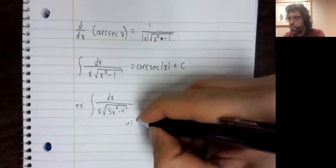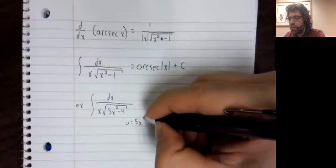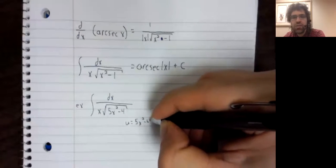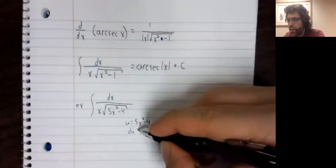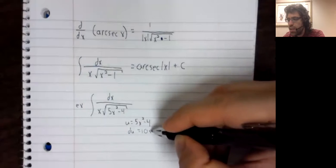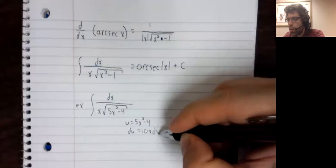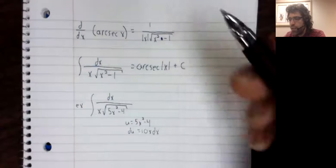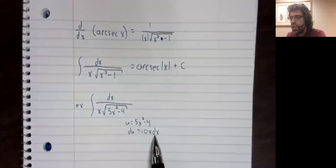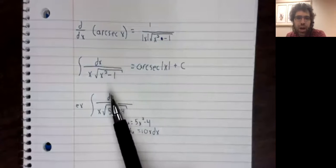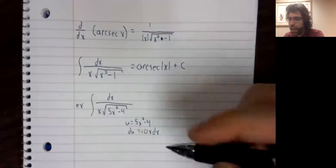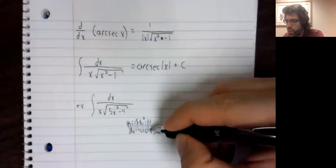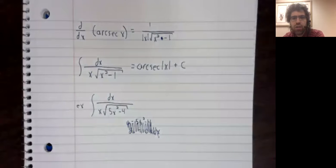I suppose you could see this composition and try letting u equal 5x squared minus four. If you do see that, you'll find quickly that it doesn't work. So to get du, you need dx being multiplied by x. We do not need dx being divided by x. So that's a non-starter.